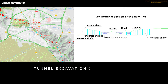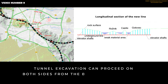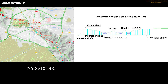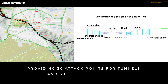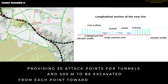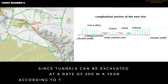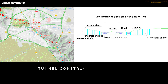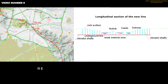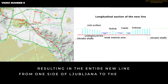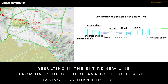Tunnel excavation can proceed on both sides from the bottom of each shaft, providing 30 attack points for tunnels and 500 meters to be excavated from each point towards neighboring shafts. Since tunnels can be excavated at a rate of 300 meters a year according to the deep underground concept, tunnel construction should be completed in less than two years, resulting in the entire new line from one side of Ljubljana to the other taking less than three years.